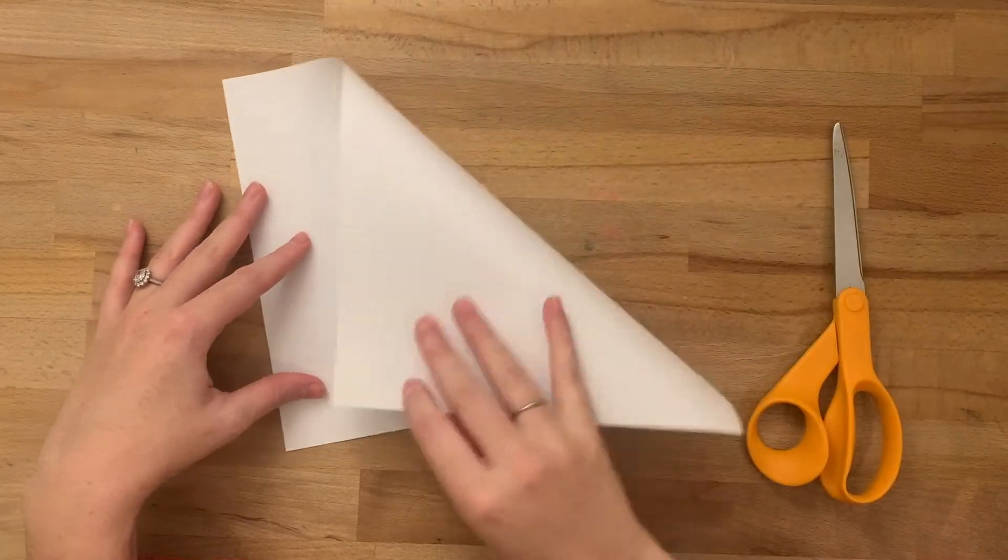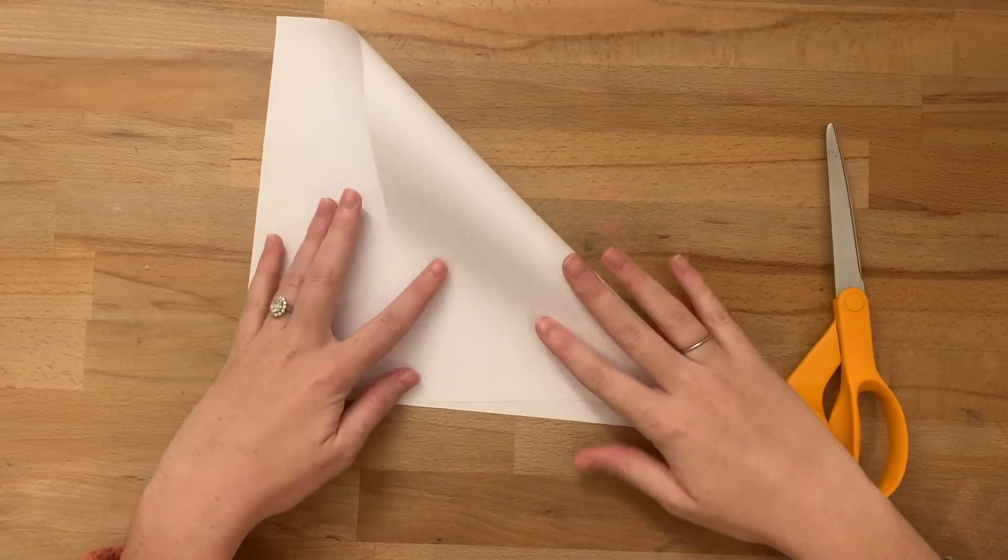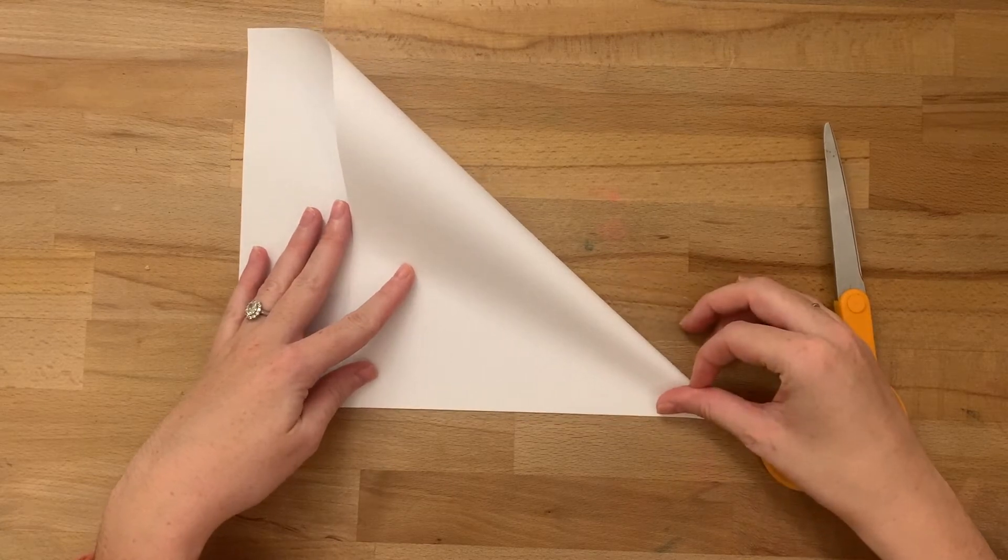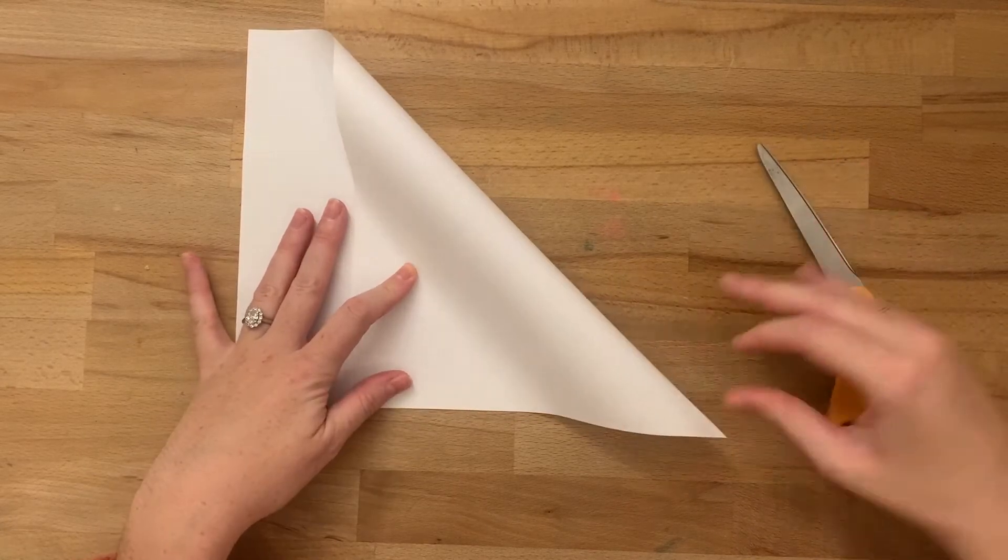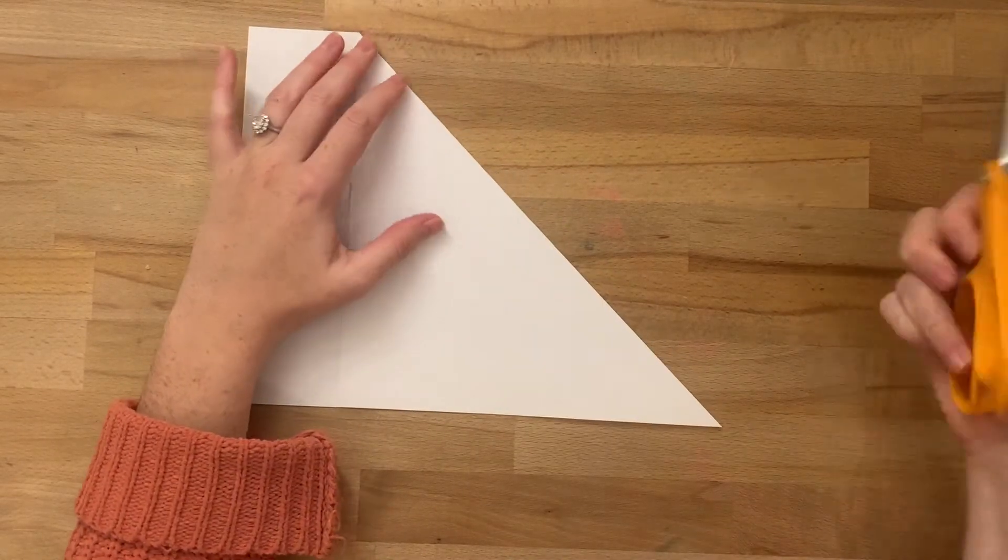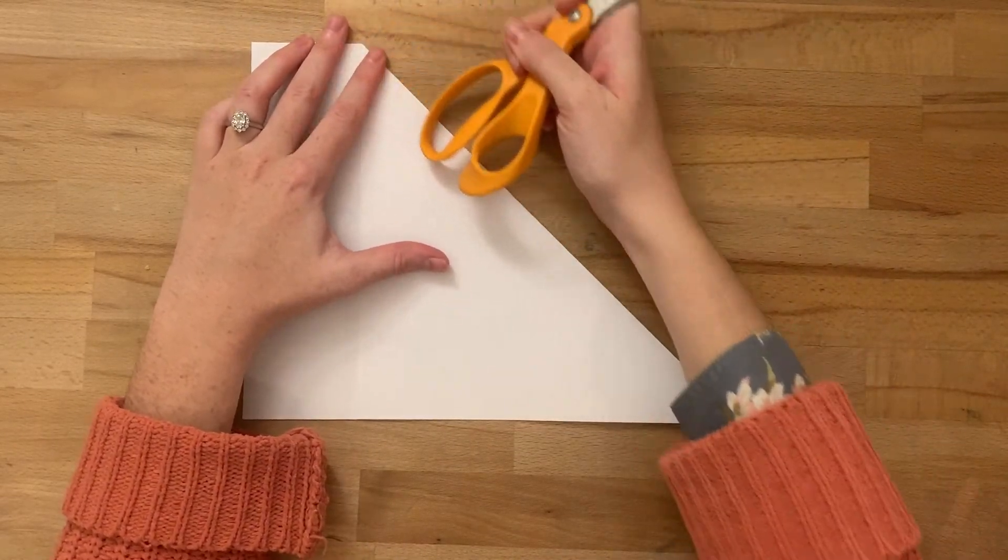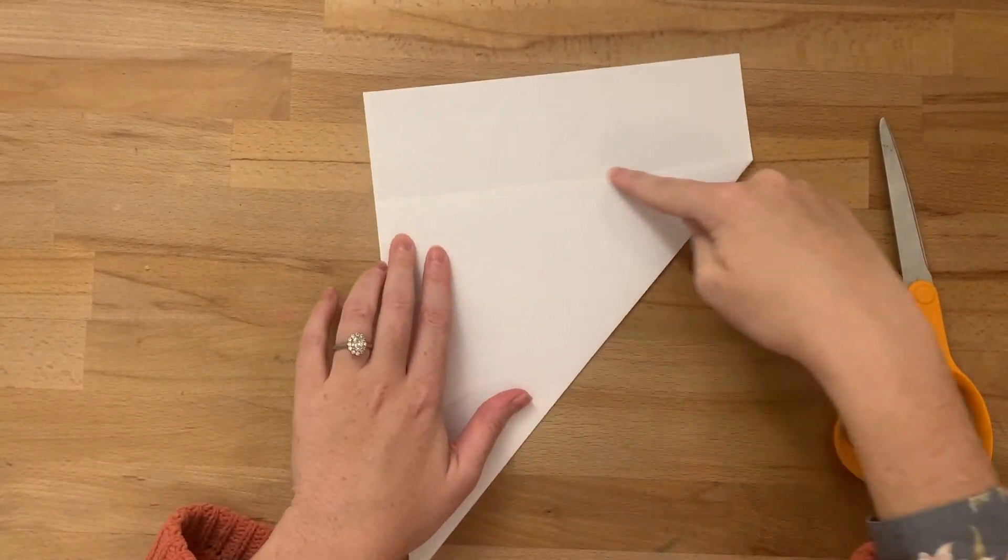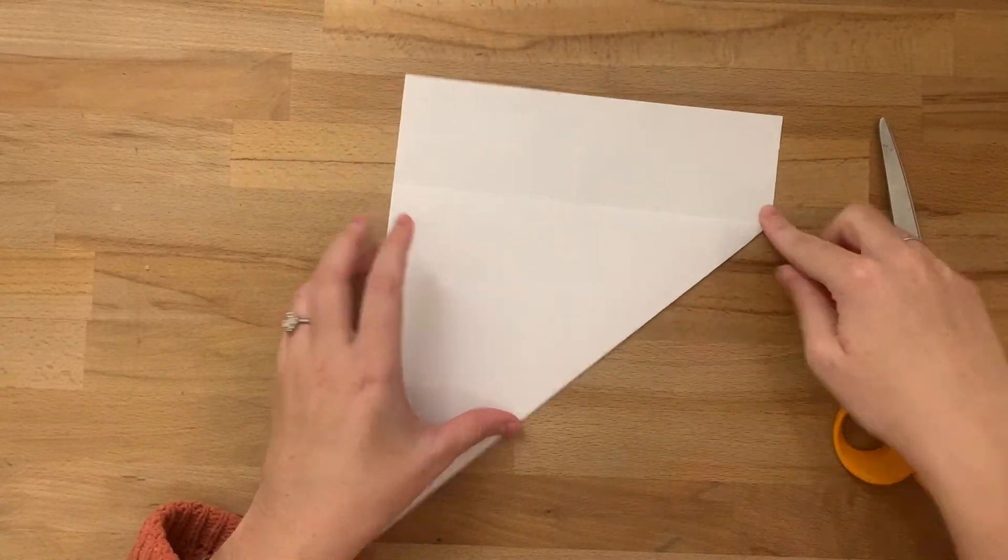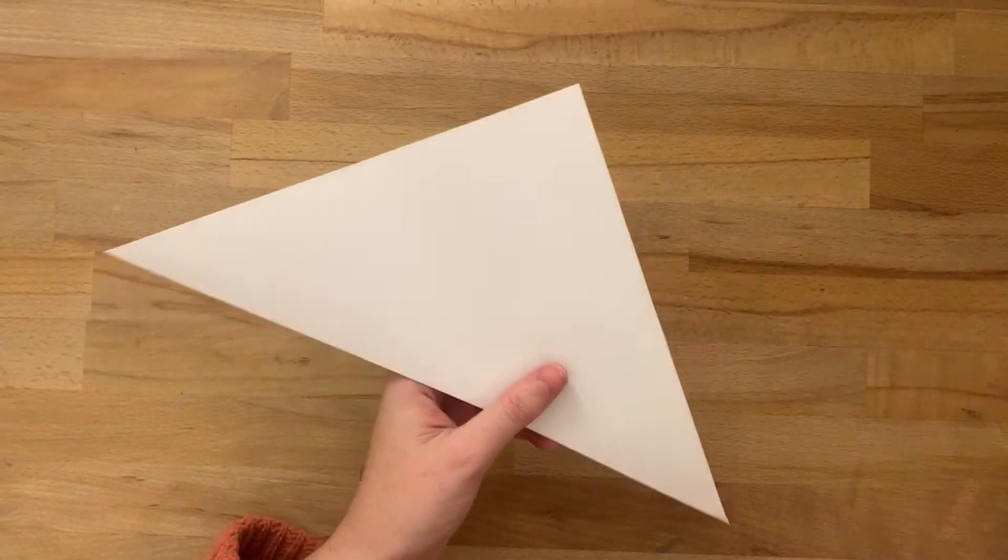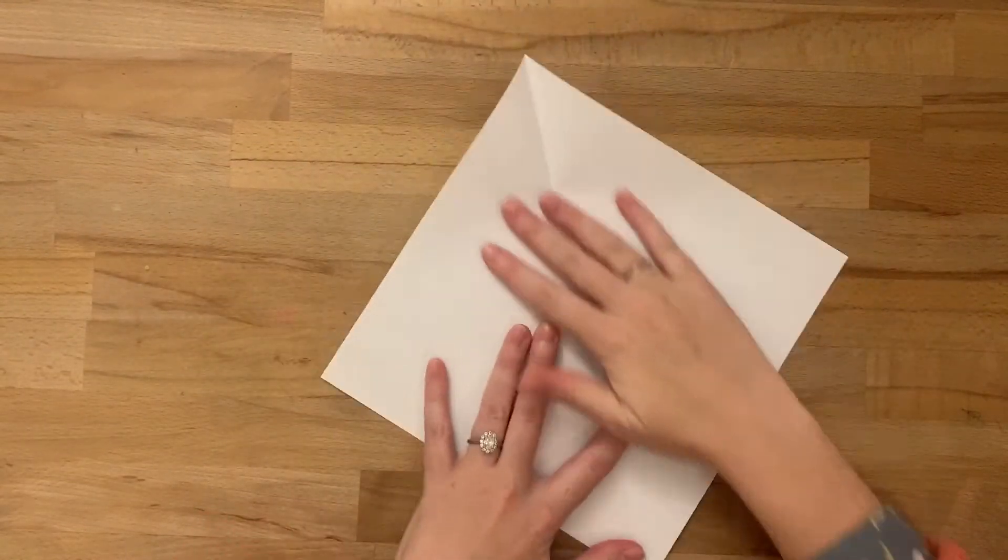That way when I cut my snowflake it will be symmetrical on all four sides. To do this, I fold my paper over like so. I can also use the handle of my scissors to make a nice sharp crease. Then you're going to cut off along this extra edge, and when you open that back up we now have a square.